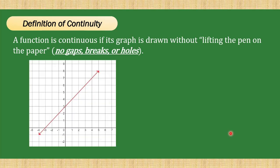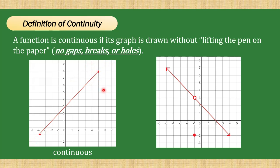For example, this first function — the one that you see on the left — is described as continuous because we can draw the graph without lifting the pen on the paper. There are no holes or gaps. On the other hand, the function graphed on the right has a hole and a replacement point below it, so this is a discontinuous function because we have this gap.